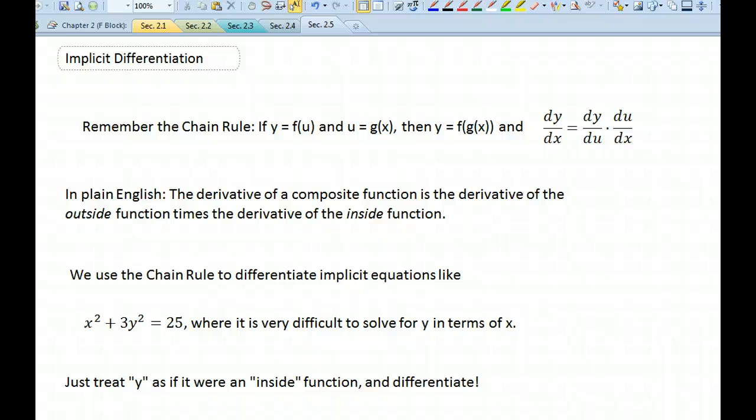When you're trying to do implicit differentiation, you need to remember the chain rule, which says that if y is some function of u and u is some function g of x, then y is a composite function with g of x inside of y, and the derivative of y with respect to x is the derivative of y with respect to u times the derivative of u with respect to x.